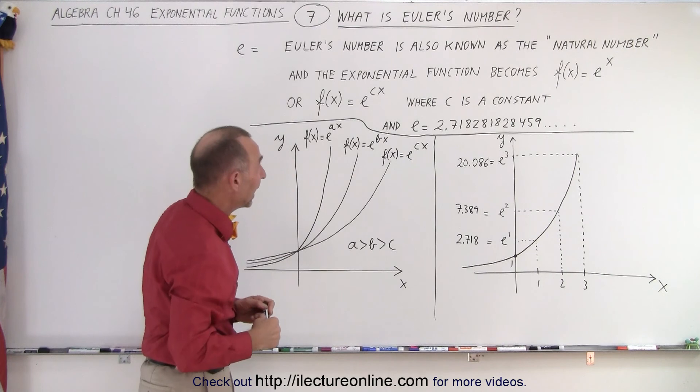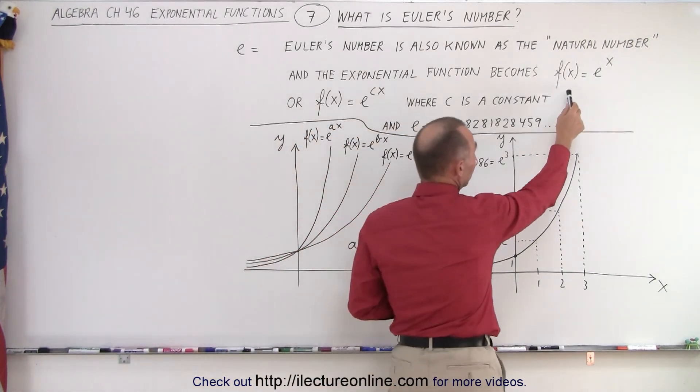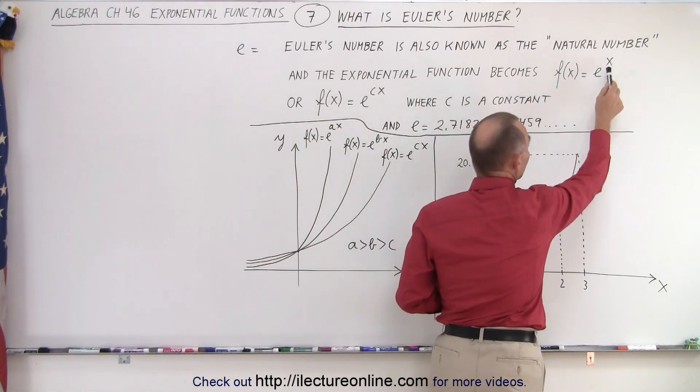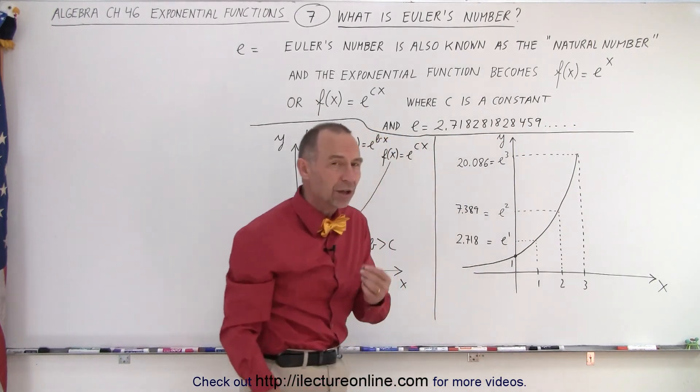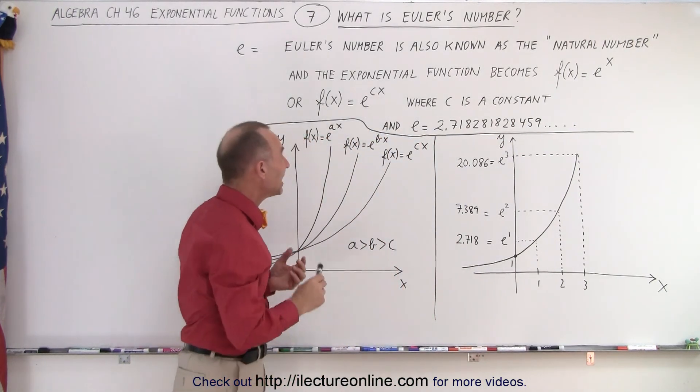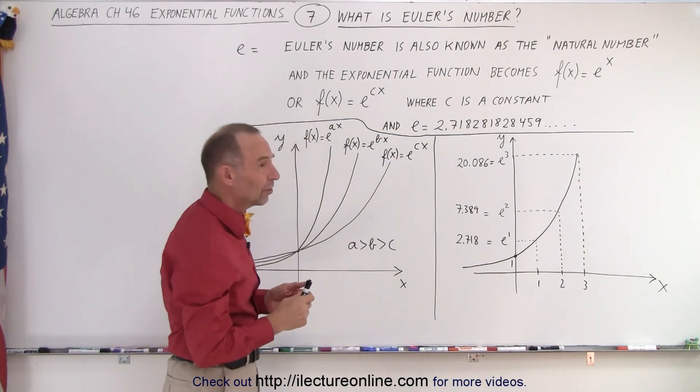It's also known as the natural number. And we write it as an exponential function, f of x equals E to the x. So, the base becomes the constant E. Now, E is indeed a constant.